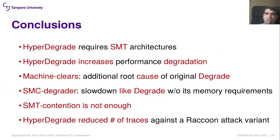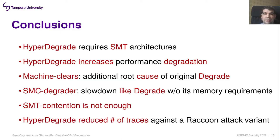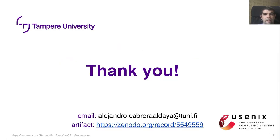Finally, some conclusions about our work. HyperDegrade requires an SMT microarchitecture. HyperDegrade also increases the slowdown factor compared to previous approaches. Machine clears are an additional root cause of the original degrade. A self-modifying code approach slows down like degrade without the shared memory requirement. SMT contention alone is not enough to cause a significant performance penalty. HyperDegrade reduces the number of traces required against a Raccoon attack variant. Thank you.